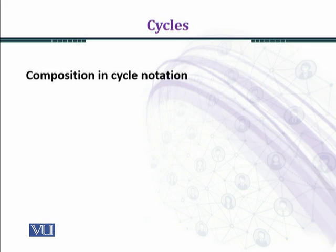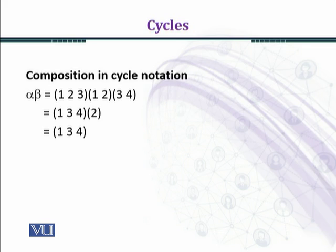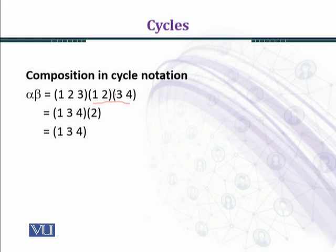Now, composition in cycle notation. We take two permutations: alpha is written as the cycle (1, 2, 3), and beta is written as the product of two cycles of length 2, that is (1, 2) and (3, 4). As we have seen, we act permutations from right to left. We can see that 3 goes to 4 in the last permutation (3, 4), meaning 1 and 2 are fixed in that last permutation, while 3 goes to 4 and 4 goes to 3.